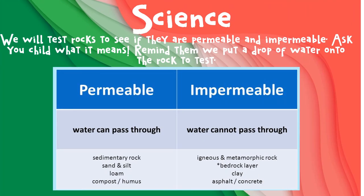We will test rocks to see if they are permeable and impermeable. Ask your child what they think it means. We put a drop of water onto the rock to test. Permeable means water can pass through, and impermeable means water cannot pass through. The children will learn about the specific rock types that are permeable and impermeable this year.